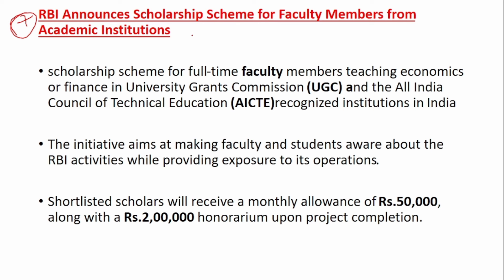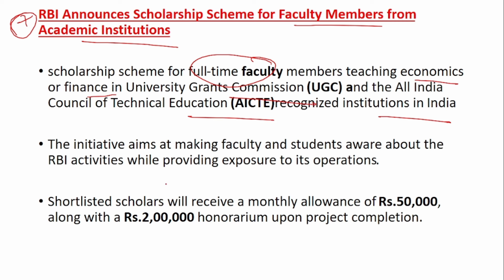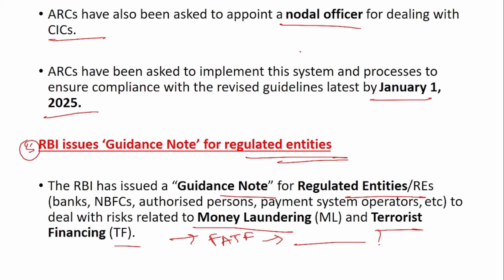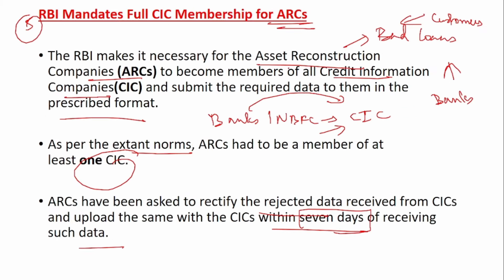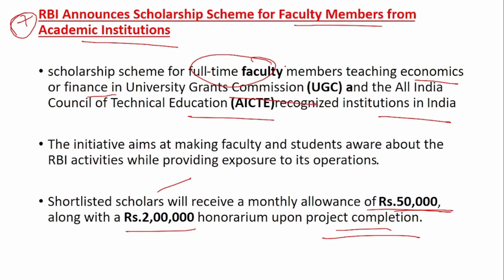Next, RBI announces a scholarship scheme for faculty members from academic institutions. The scholarship scheme for full-time faculty members has been announced — for members teaching economics or finance in UGC and AICTE-recognized institutions. Shortlisted scholars will receive a monthly allowance of Rs. 50,000 along with a Rs. 2 lakh honorarium upon project completion. These are various initiatives brought by the RBI in the recently held MPC meeting — do read this multiple times.